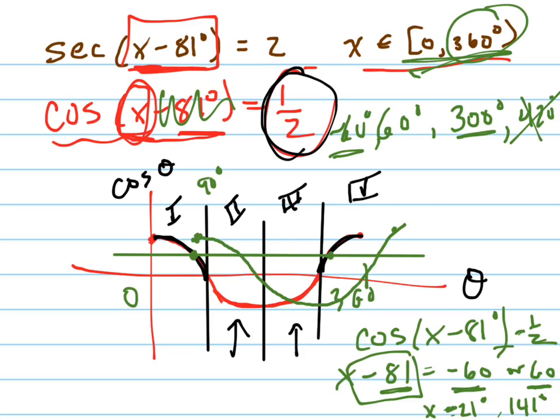Again, if I had tried it with 420, or I'm sorry, 300, when I added 81 to that, I would have been just over my 360-degree domain restriction, and that's why those are my two answers.